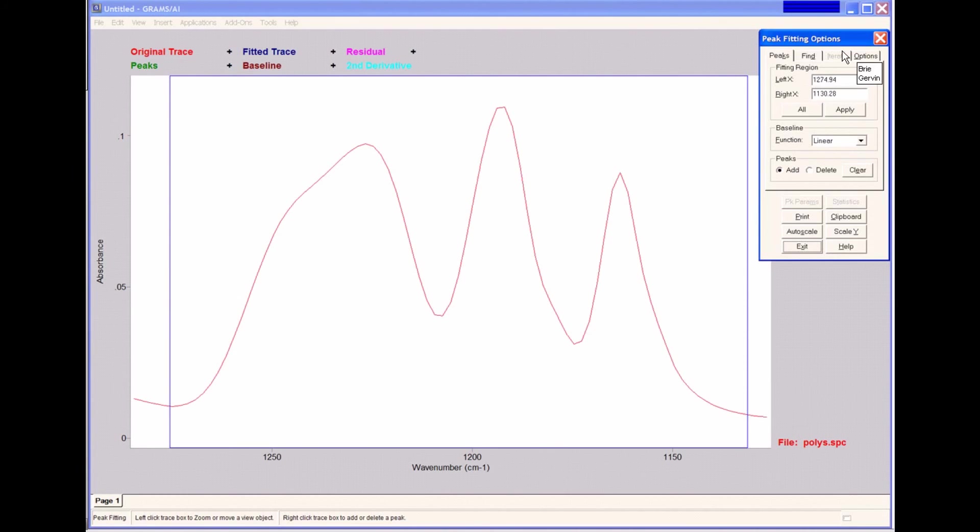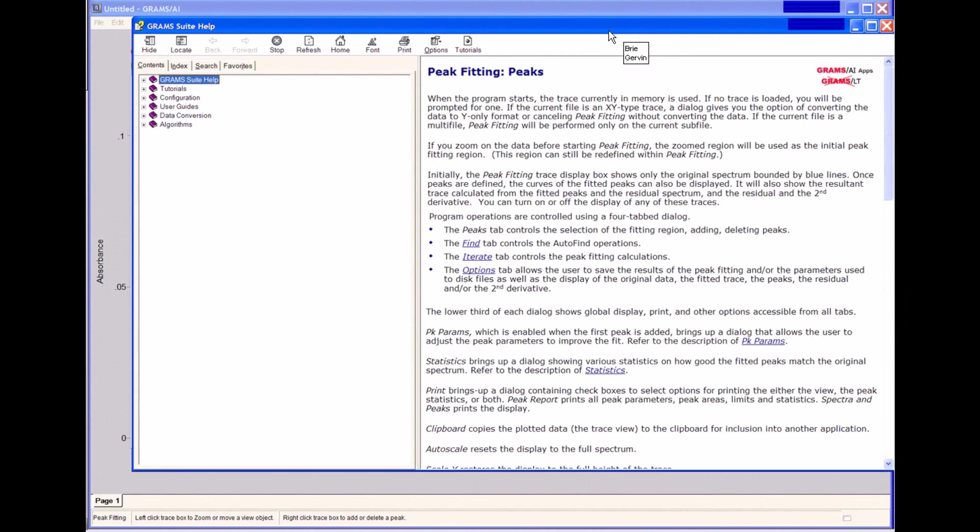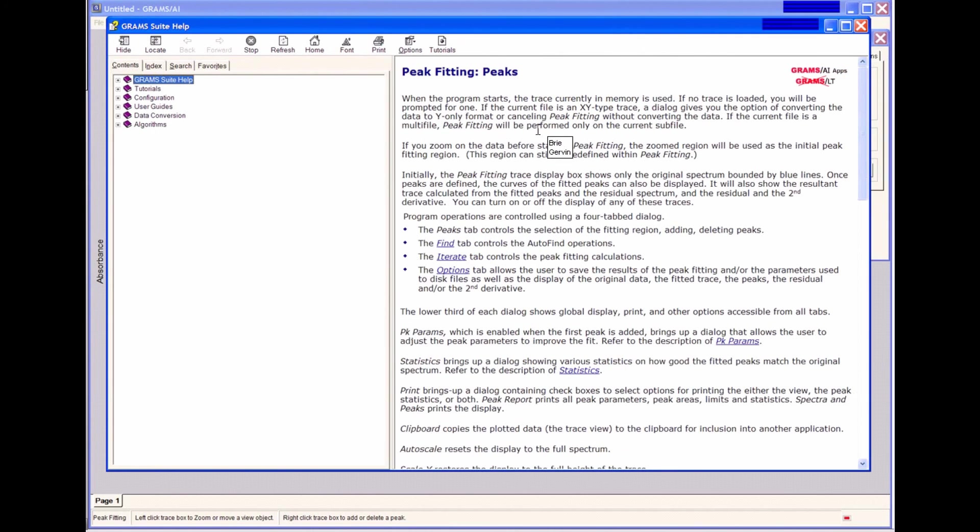On every tab section here, we see the same options at the bottom. We can print, auto scale our view, scale in the Y direction, copy to clipboard. Once we have peaks defined, we can also see our peak parameters and statistics. At any point in time during the fit operation, we can access the Grams online help by clicking the help button, which brings up the help dialog related to the exact screen we're looking at.